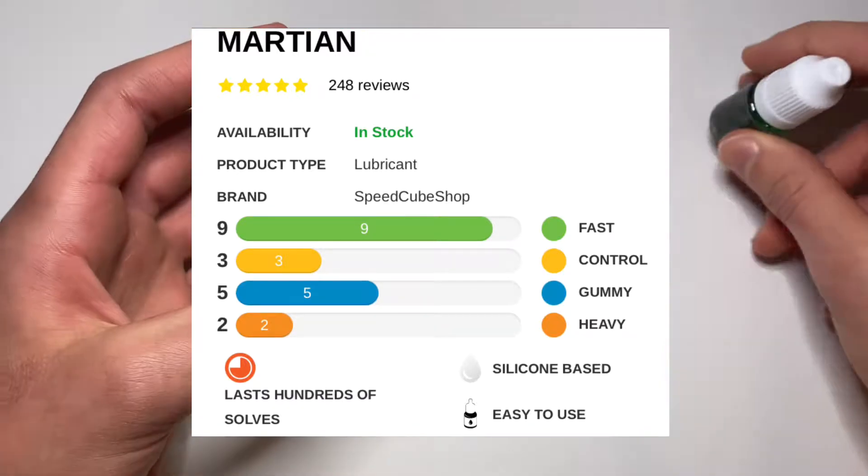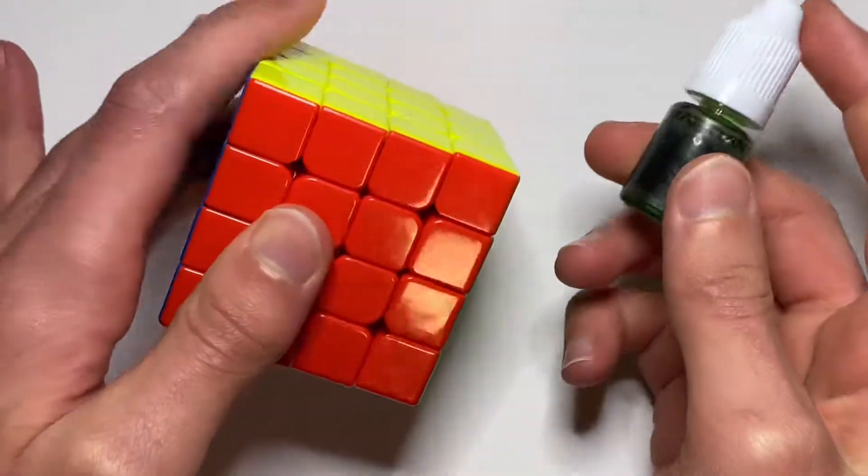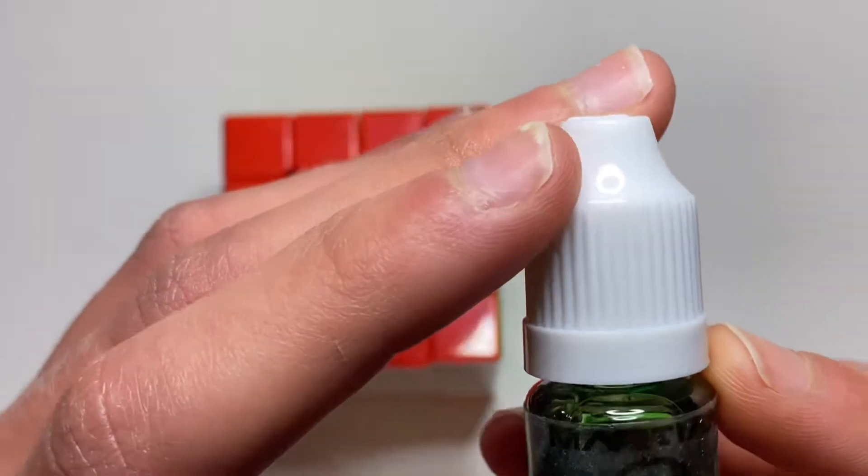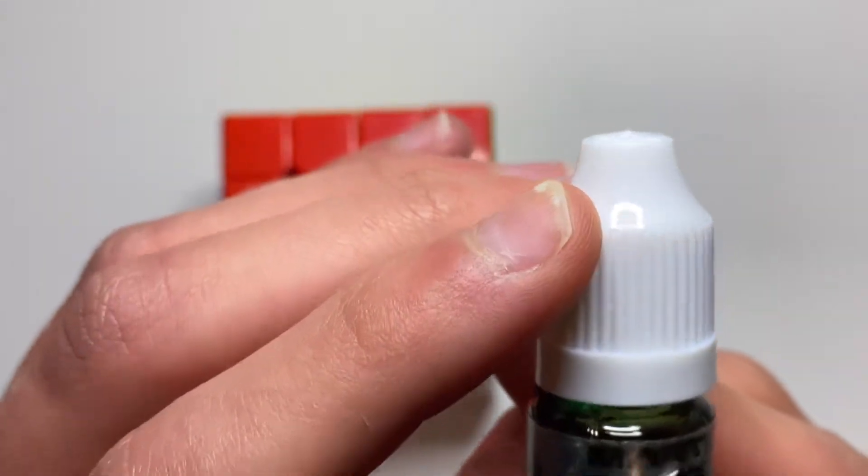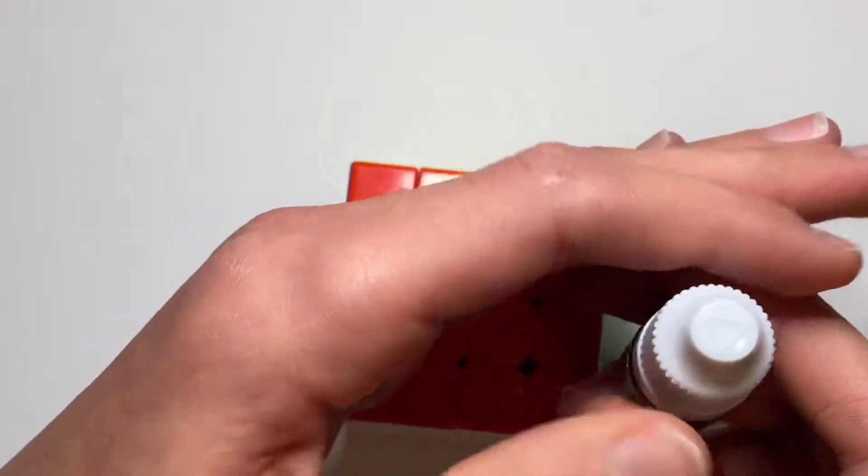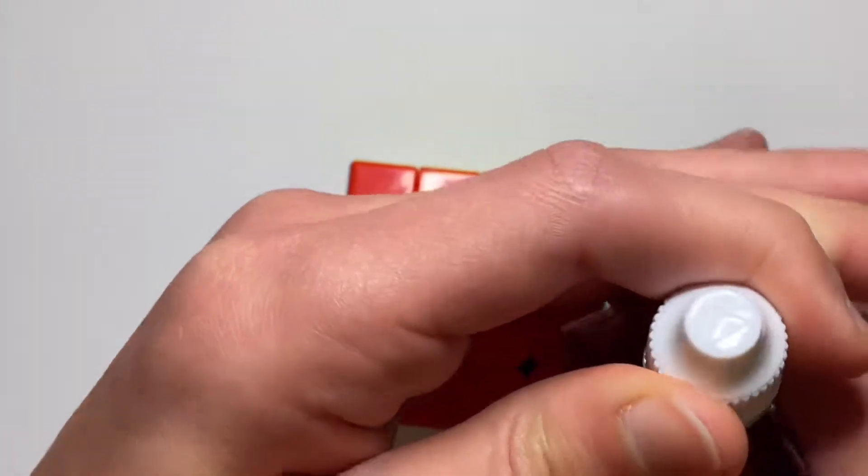So let's see how the MGC 4x4 with the Martian lube turns out. Here we have the Martian lube and as you can see it's a 5ml bottle. You do a couple drops of break-in and then we'll see how well it turns. I'll scramble it just to break it in more. Let's open this up.